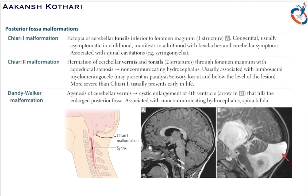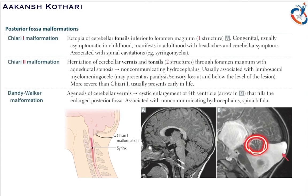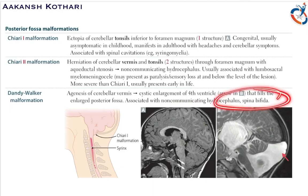Dandy-Walker malformation is due to agenesis of the cerebellar vermis — there is no formation of the cerebellar vermis. Because of this, there is excessive enlargement of the fourth ventricle. This cystic enlargement fills the posterior fossa, and it is also associated with non-communicating hydrocephalus and spina bifida.